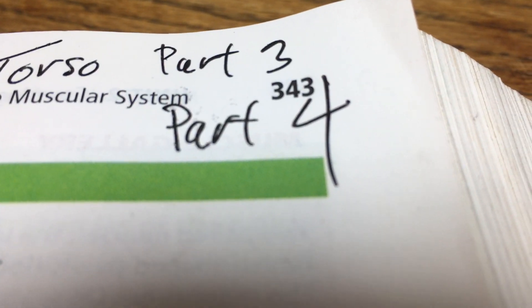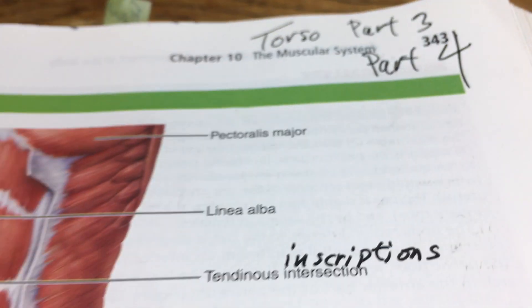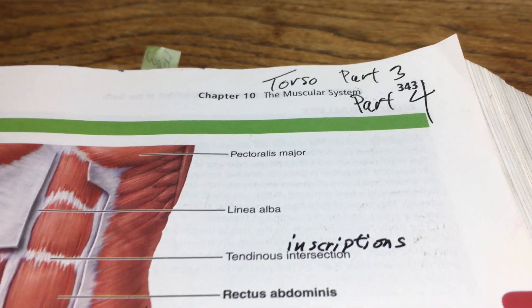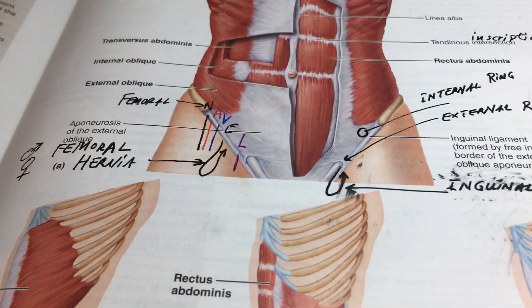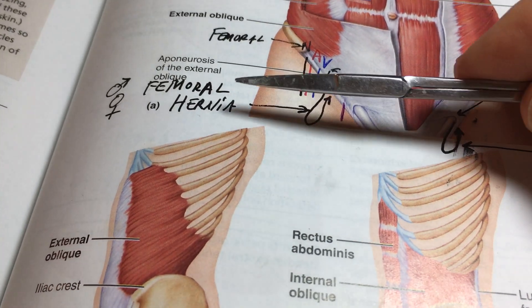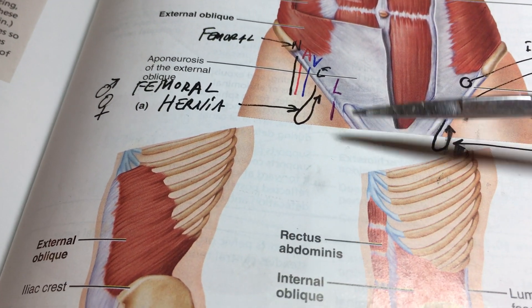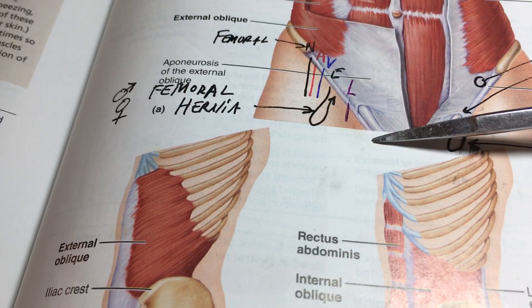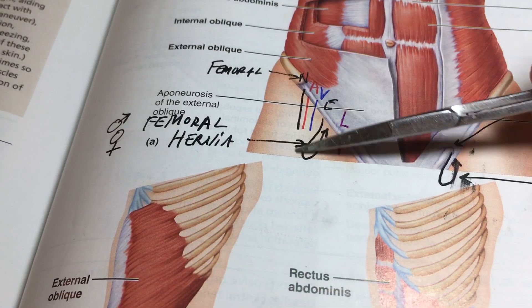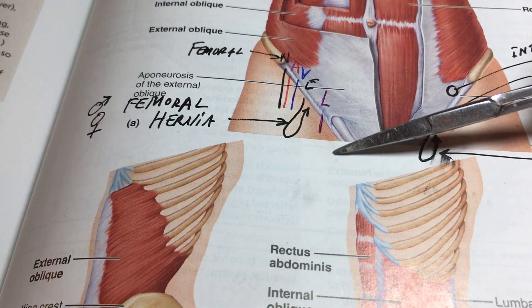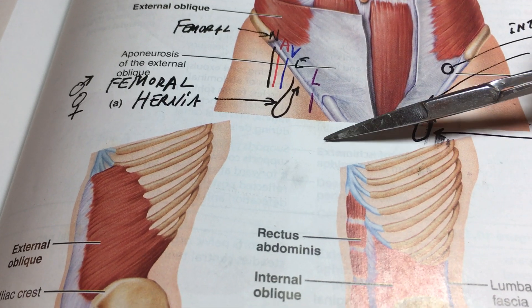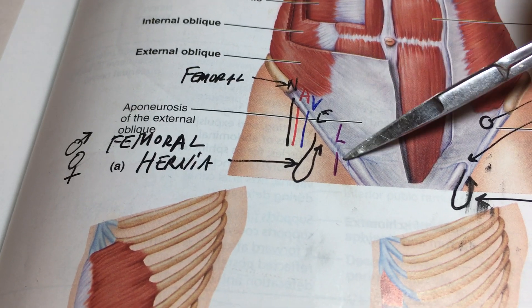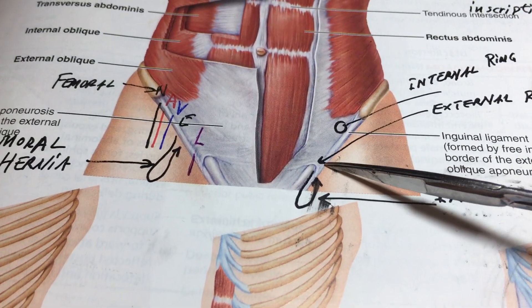It's now part 4 on page 343, we're looking at the torso - this is part 4 of the torso portion of the muscular system. We just spoke about the femoral hernia which occurs in the femoral triangle. Drawing it this way: here is a femoral triangle, there's a sartorius muscle here, a superficial muscle called gracilis here, and then there is the inguinal canal or ligament.